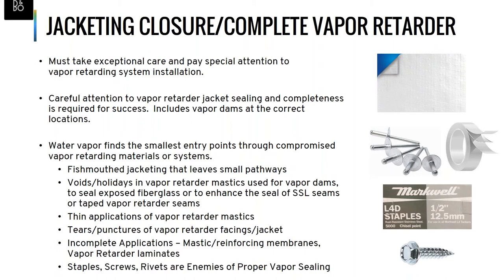Care needs to be used not to puncture the vapor retarder when installing the insulation system. Screws, staples, and rivets are the enemy of a vapor retarder. A common installation error is a protective finish jacket secured with a method that punctures the underlying system, requiring repair to the vapor retarder and reinstallation of the finish jacket using a method that does not compromise the system. Specs calling out screws, pop rivets, or staples in the vapor retarding jacket should be pointed out to the specifier as creating a strong chance of failure.